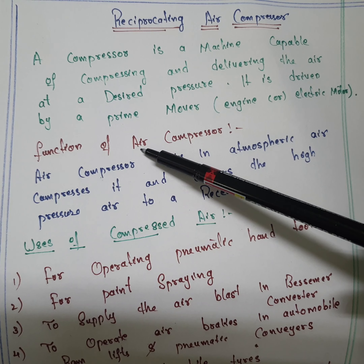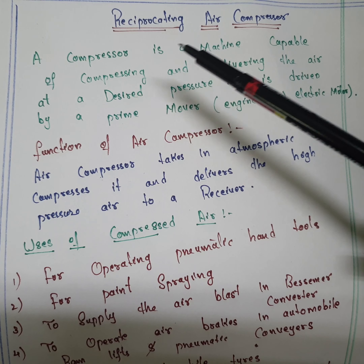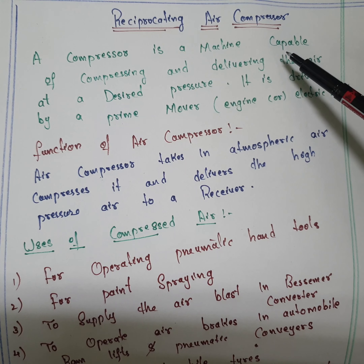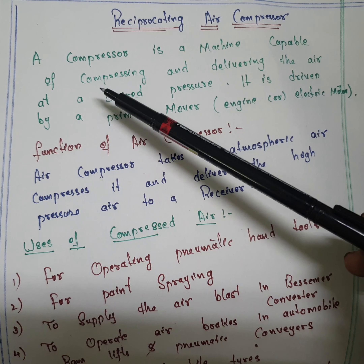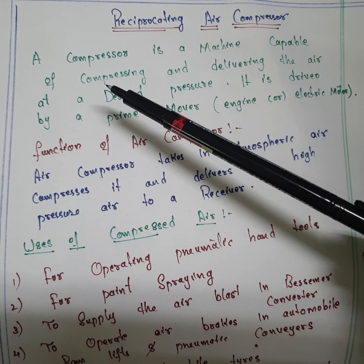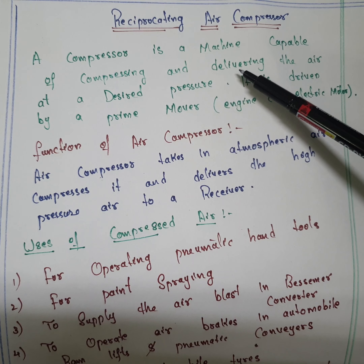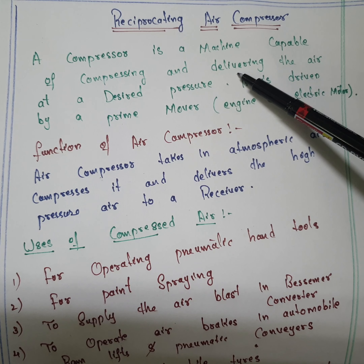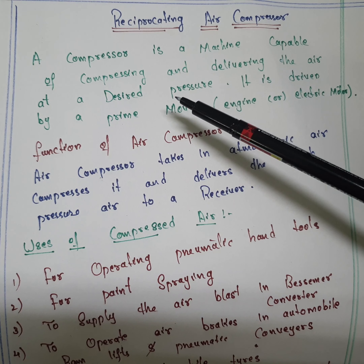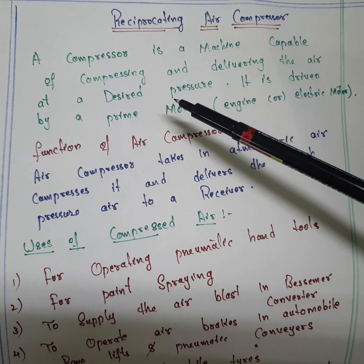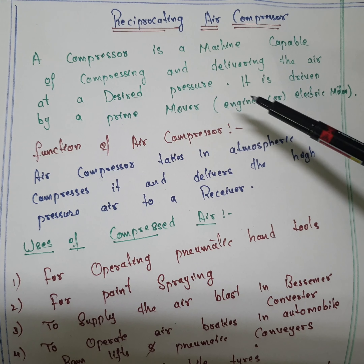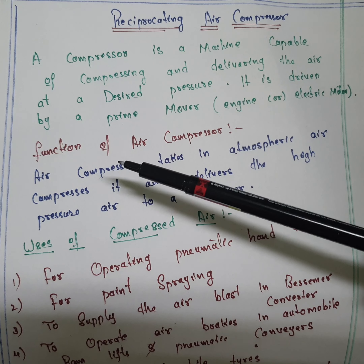Reciprocating means to-and-fro motion will take place. The compressor is a machine capable of compressing and delivering air. It must perform two operations: first compress, then deliver the air at a desired pressure — whether that is 10 bar, 100 bar, or 1000 bar, whatever your requirement is.